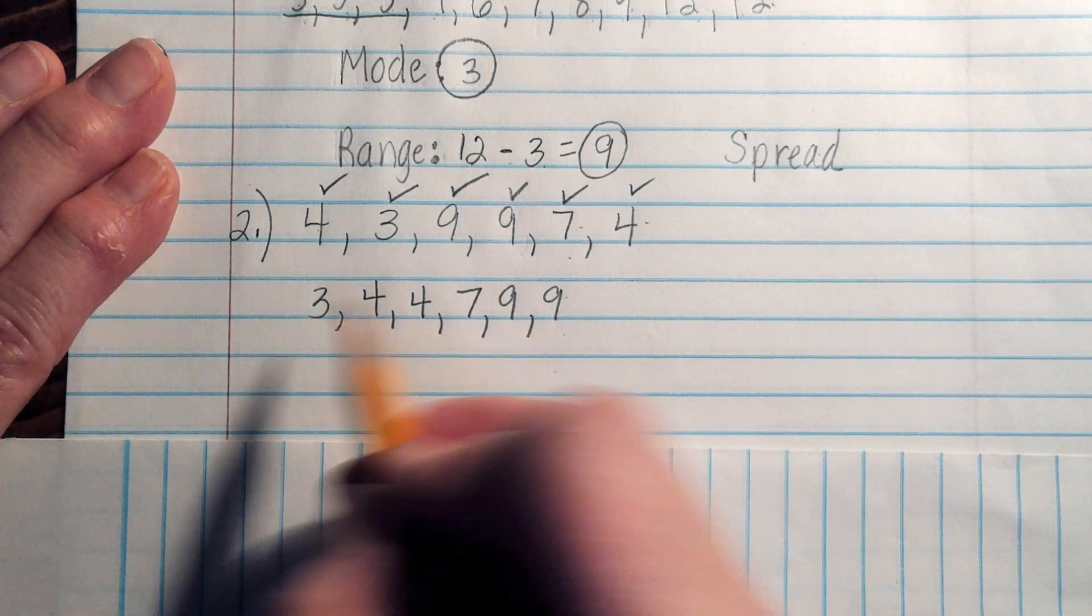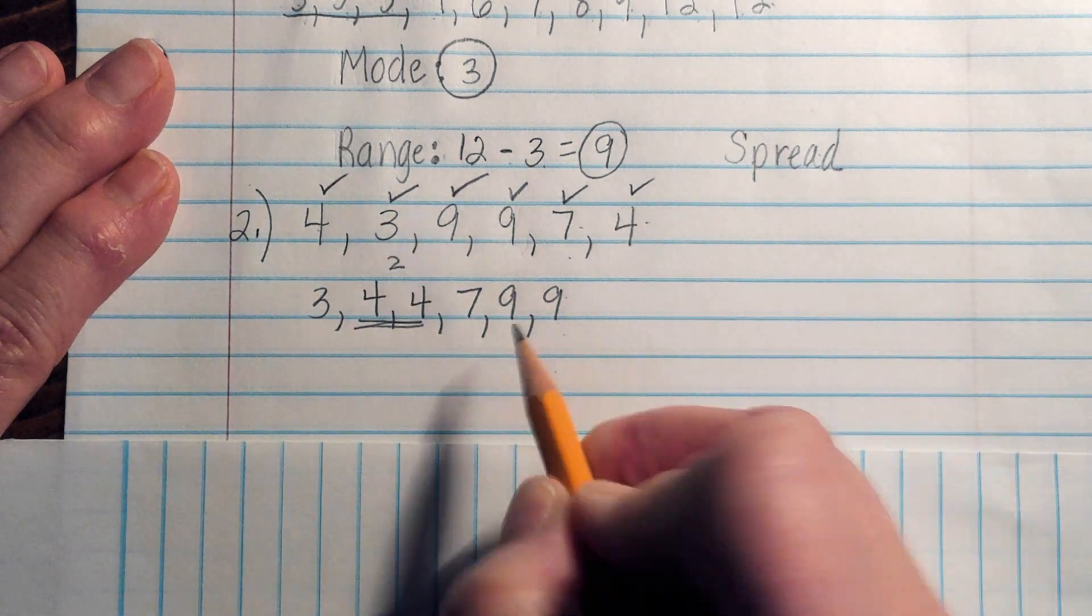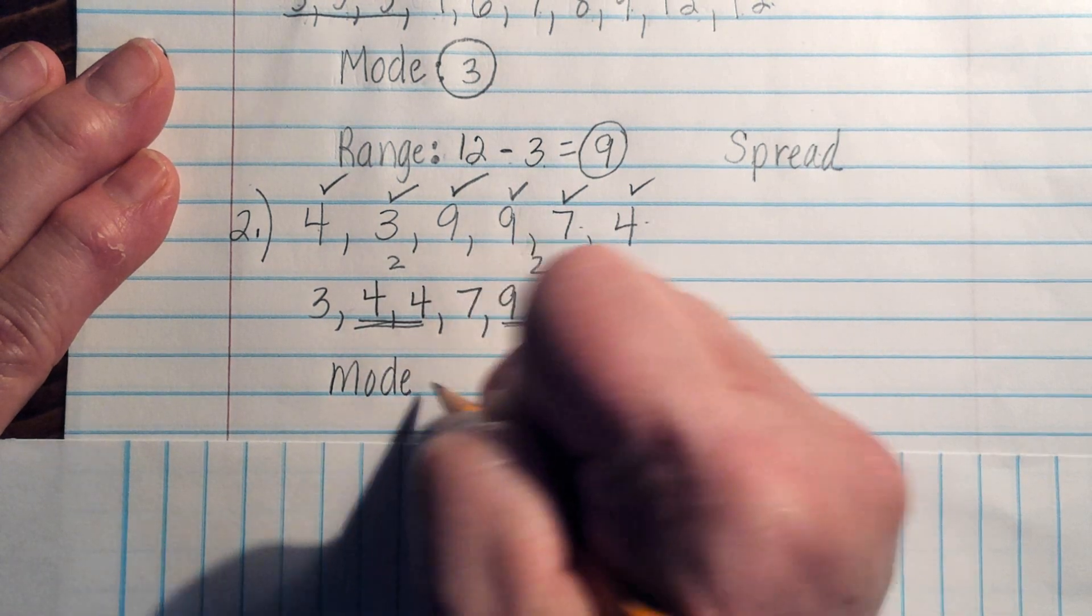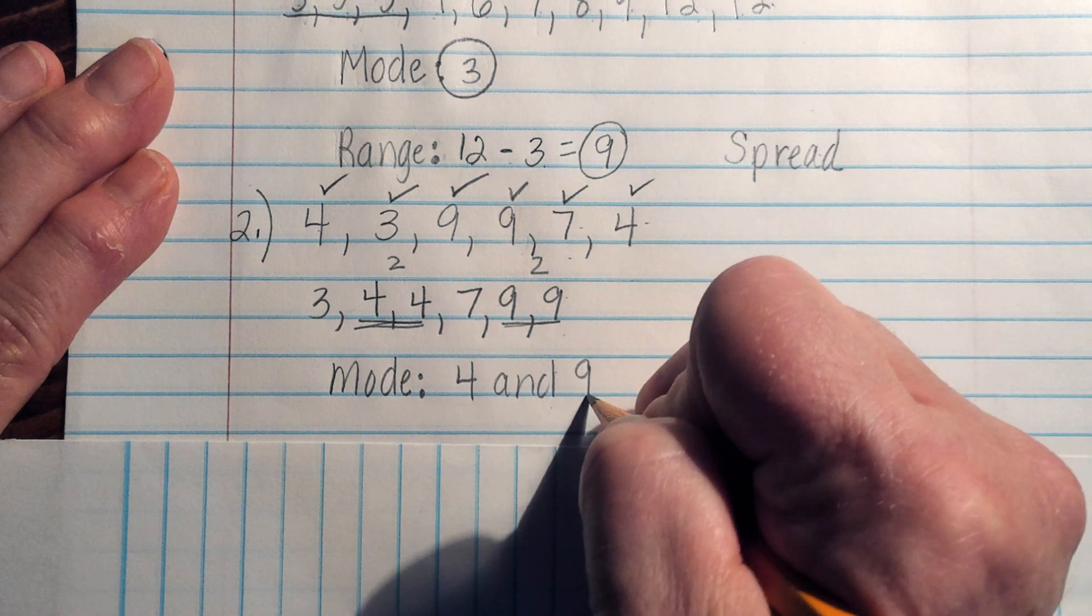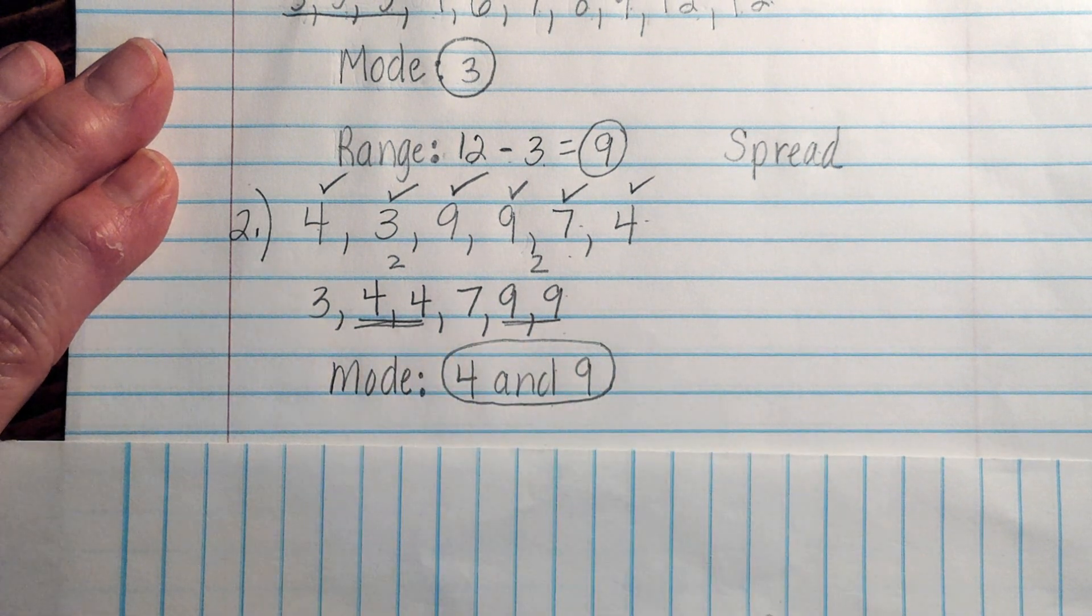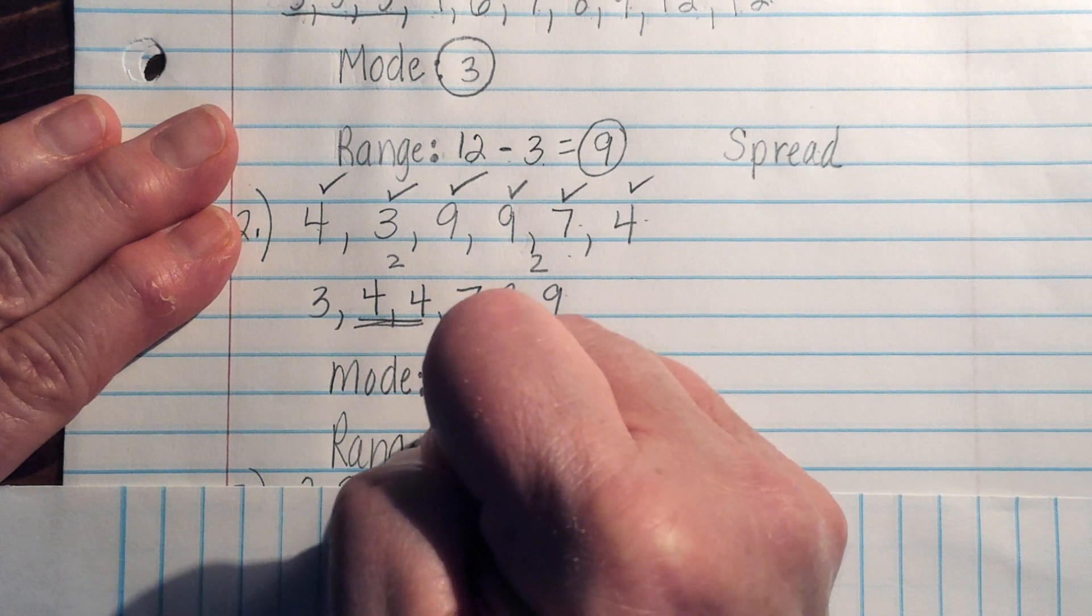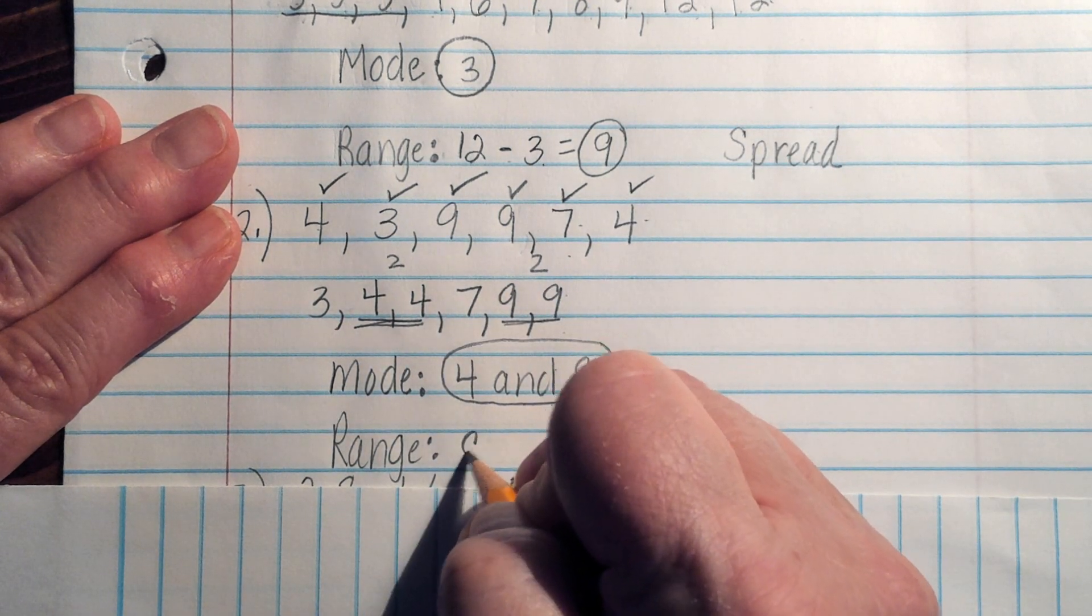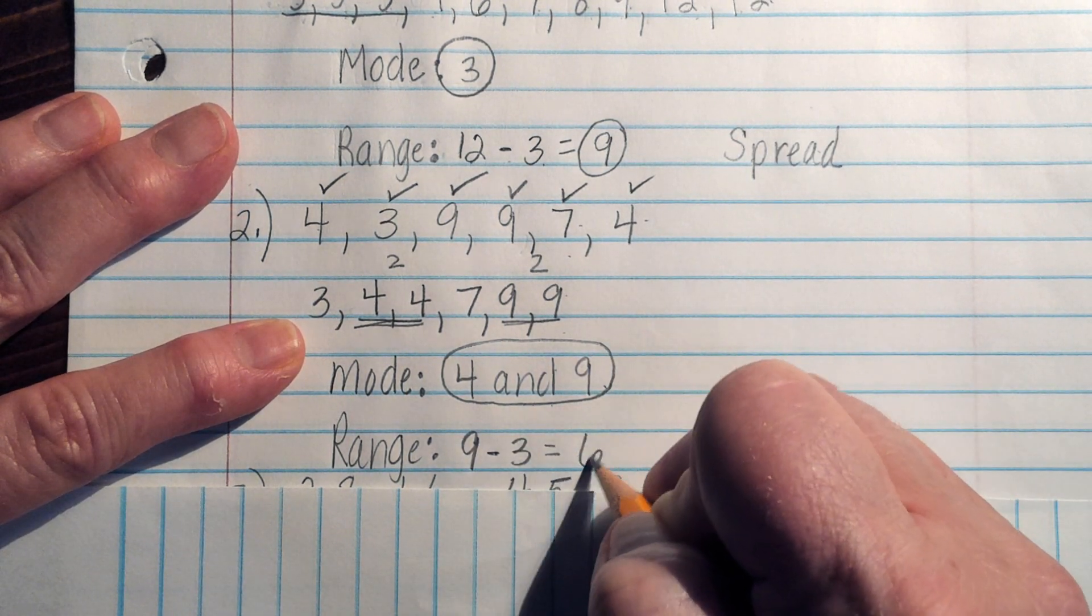Okay. Going through and looking at my numbers, I notice that I have two fours and I have two nines. In this case, our mode will be four and nine because both of them occur twice. So they're both our modes. Our range, our largest number, which is 9, subtracted from our smallest number is 3. So our range is 6.